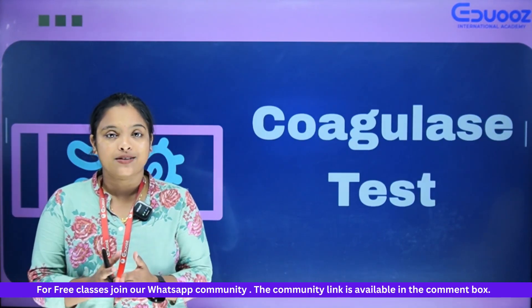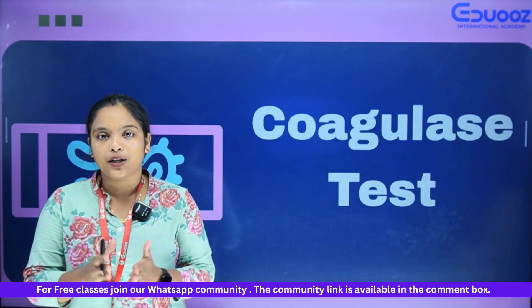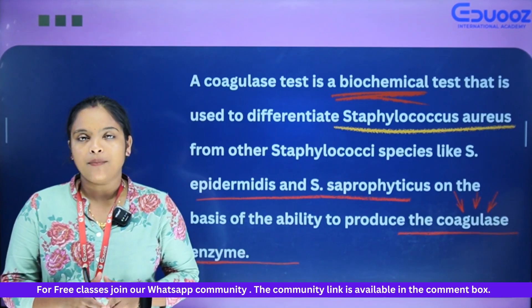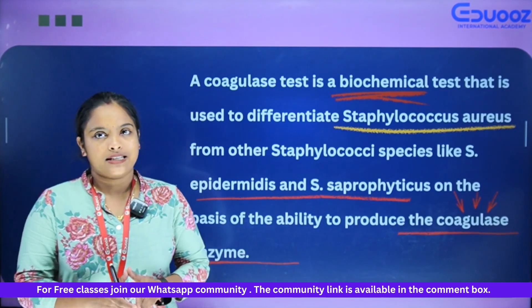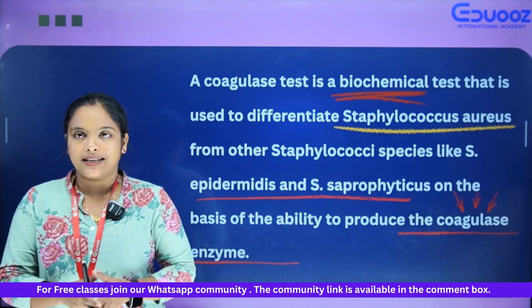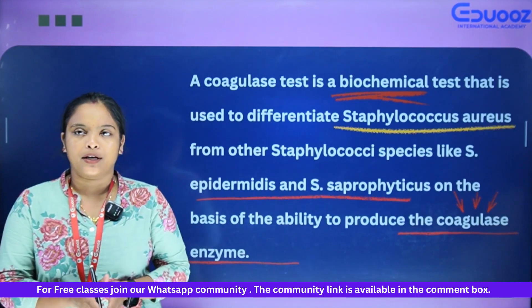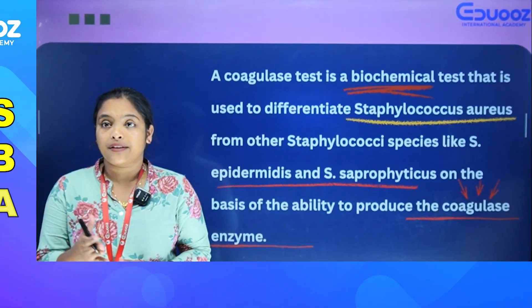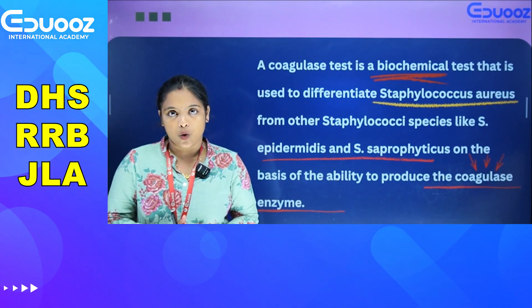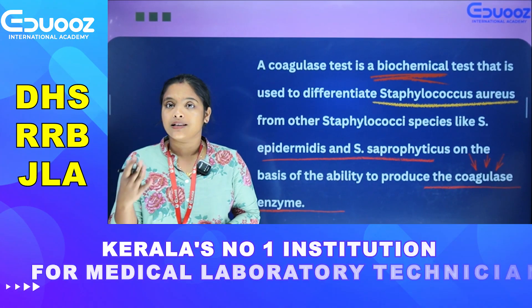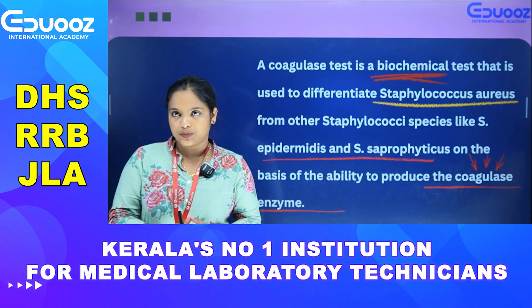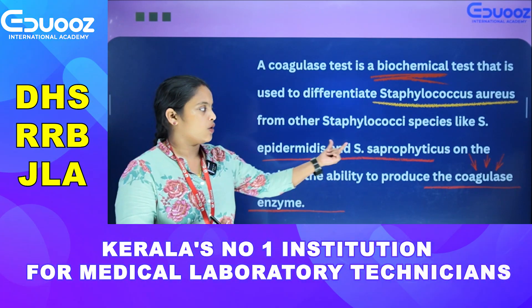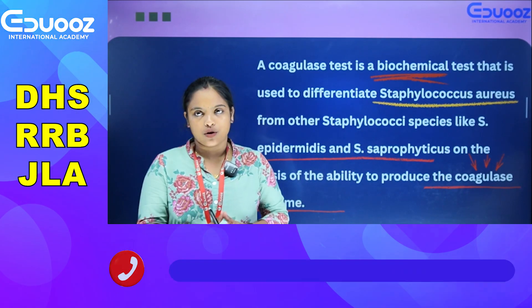What is the objective? What is the coagulase test? The coagulase test is used to differentiate Staphylococcus aureus from other Staphylococcus species like Epidermidis or Saprophyticus. The location is present on the surface.